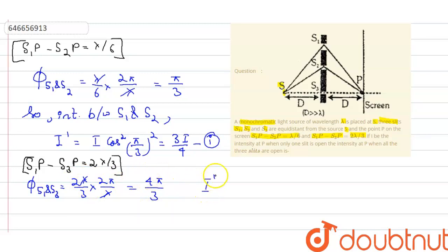We can calculate the intensity, which comes out to be i cosine squared 4π by 3. This comes out to be i by 4. This is our equation 2.